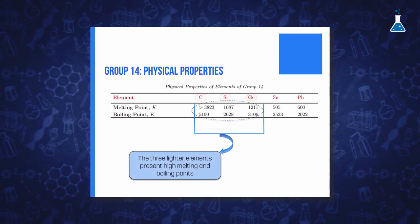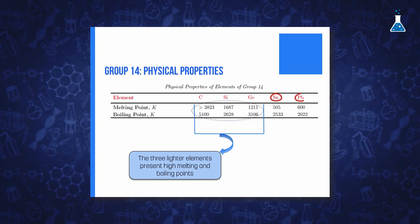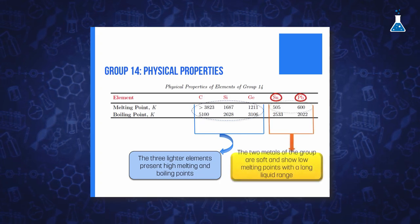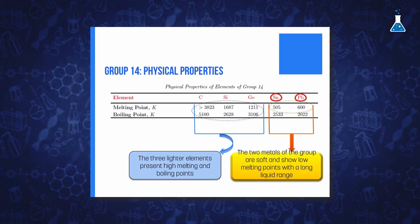In addition, the two metals in the group, tin and lead, are soft low melting metals, showing both long liquid ranges.